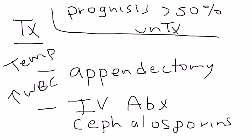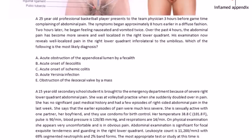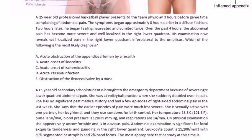Now that we've talked a little bit about appendicitis, let's jump into some clinical vignettes here. So here's the first one. A 25-year-old professional basketball player presents to the team physician three hours before game time, complaining of abdominal pain. The symptoms began approximately eight hours earlier in a diffuse fashion. Two hours later, he began feeling nauseated and vomited twice. Over the past four hours, the abdominal pain has become more severe and well-localized in the right lower quadrant. His examination now reveals well-localized pain in the right lower quadrant, inferolateral to the umbilicus. Which of the following is the most likely diagnosis?